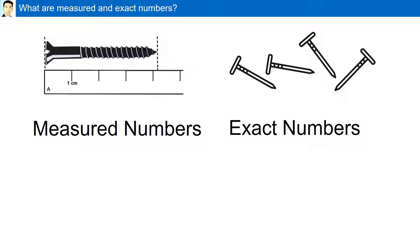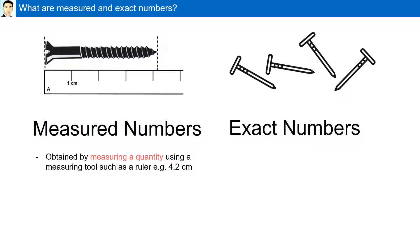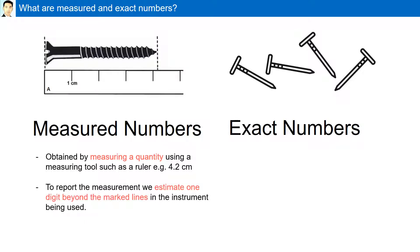What are measured and exact numbers? Measured numbers are obtained by measuring a quantity using a measuring tool such as a ruler. To report a measurement, we estimate one digit beyond the mark lines in the measurement being used.